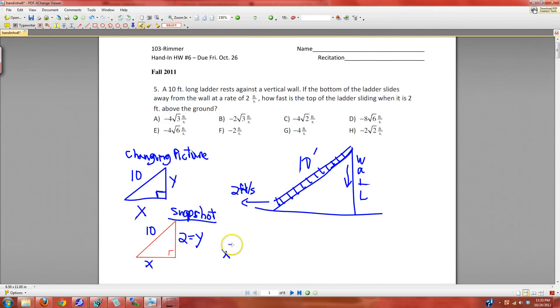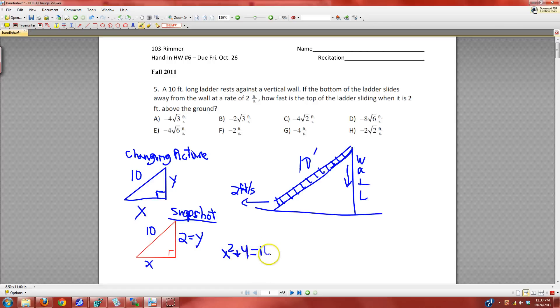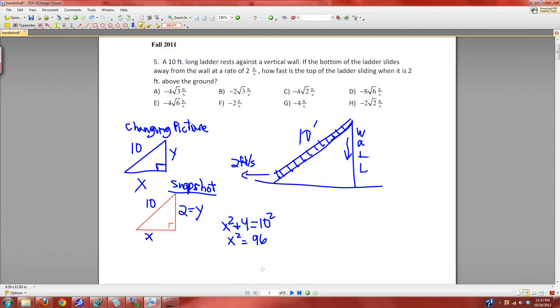x squared plus 4 is 10 squared. So x squared is 96. 10 squared is 100, take away the 4. And then so x is the square root of 96.